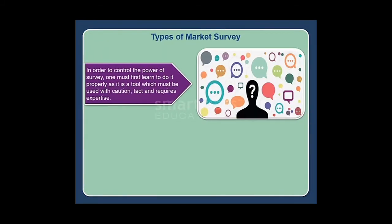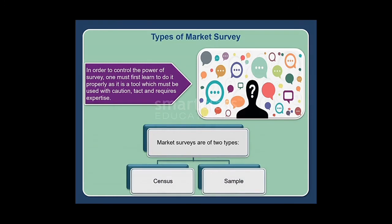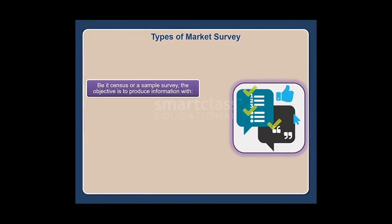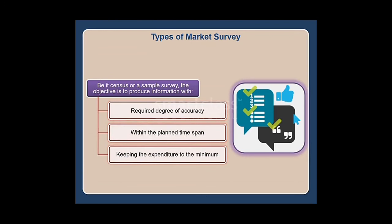Next are the types of market survey. In order to harness the power of a survey, one must first learn to do it properly, as it is a tool which must be used with caution and tact, and requires expertise. Market surveys are of two types: census and sample. The objective of both is to produce information with the required degree of accuracy within the planned time span and keeping expenditure to a minimum.